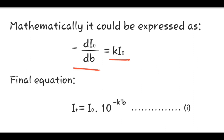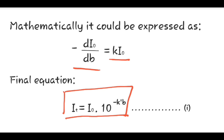After performing several mathematical operations, the final equation obtained is: I_T is equal to I₀ into 10 raised to minus K'B. Here, I_T is equal to the intensity of the transmitted radiation, I₀ is equal to the intensity of the incident radiation, K' is the proportionality constant, and B is the thickness of the medium.